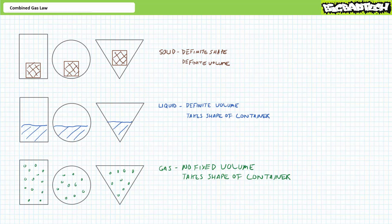Lastly, gases have no definite volume, nor a defined shape, and fill the shape and volume of their container. The molecules composing a gas aren't in close contact with one another and they buzz around like a swarm of bees. The hotter the gas, the angrier the bees. All that empty space inside a gas gives gases a unique property: that of compressibility.